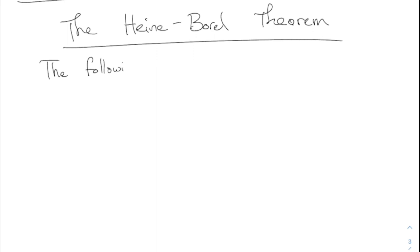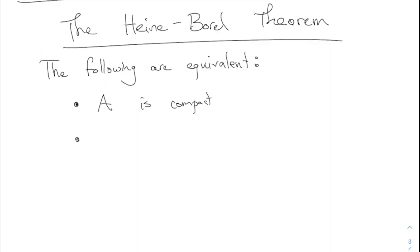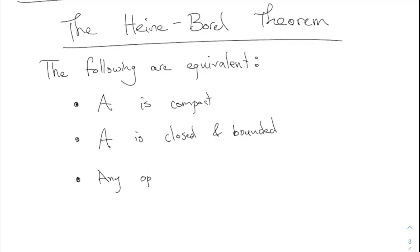The theorem says the following are equivalent — there are three separate descriptions of compact sets. First: A is compact, meaning every sequence in A has a convergent subsequence converging to a point of A. Second: A is closed and bounded. Third: any open cover of A has a finite subcover.